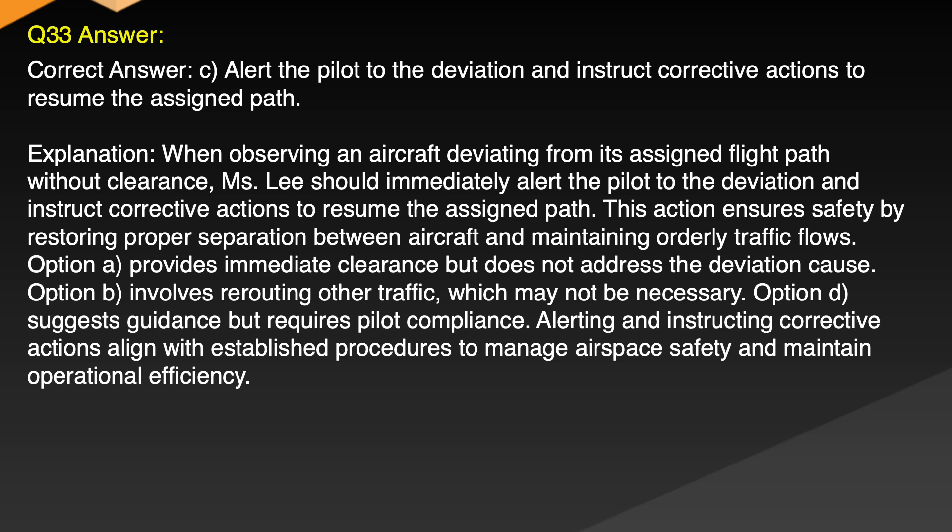Explanation: When observing an aircraft deviating from its assigned flight path without clearance, Ms. Lee should immediately alert the pilot to the deviation and instruct corrective actions to resume the assigned path. This action ensures safety by restoring proper separation between aircraft and maintaining orderly traffic flow. Option A provides immediate clearance but does not address the deviation cause. Option B involves rerouting other traffic which may not be necessary. Option D suggests guidance but requires pilot compliance. Alerting and instructing corrective actions align with established procedures to manage airspace safety and maintain operational efficiency.